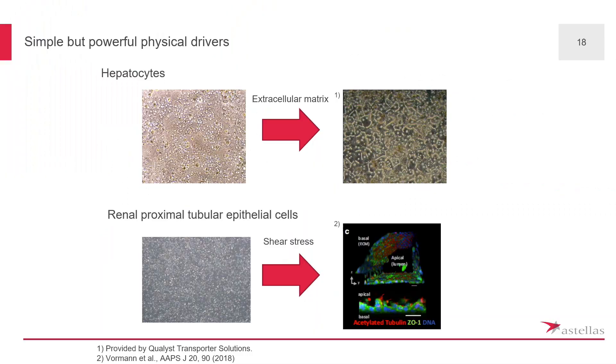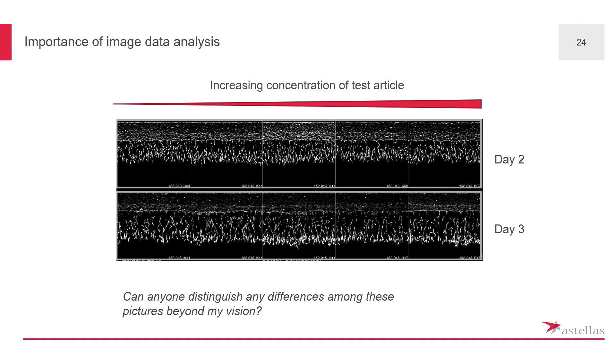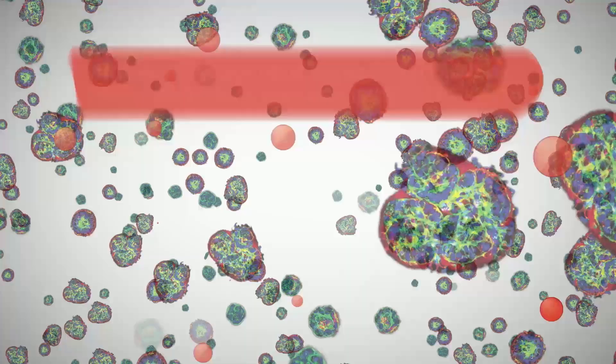The bottom file shows an example of a linear proximal tubular epithelial test. We wanted to evaluate any effect of test articles on angiogenesis.